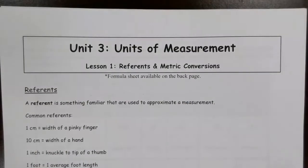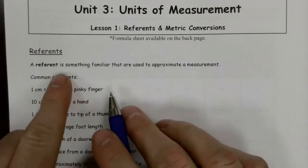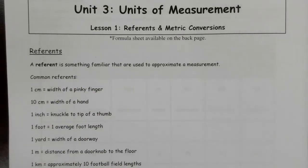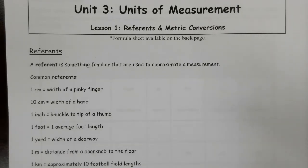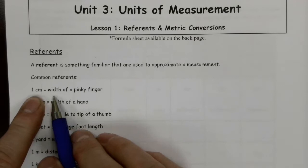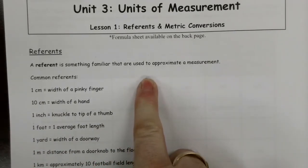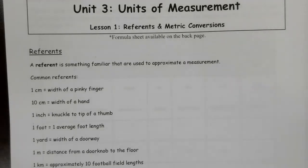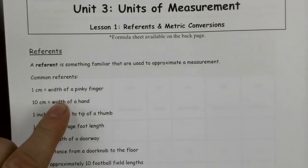We're going to start with this idea of a referent. A referent is something familiar that is used to approximate a measurement. We've got a system of measurement that we use and we're quite comfortable with it. However, we don't always carry, for example, a ruler with us to make measurements. We don't always have the appropriate tool to make a more precise, accurate measurement. So we use referents — just something to give us a sense of what a measurement might be.